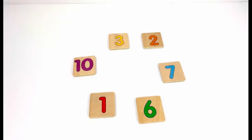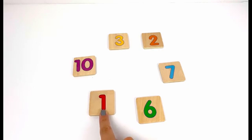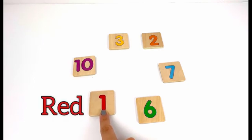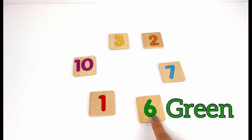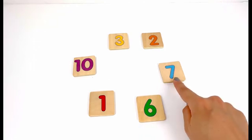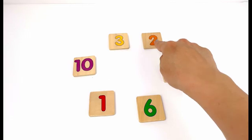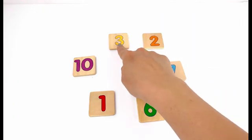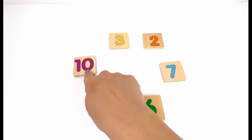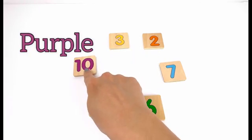Let's see what numbers are left on the table. Number one — it's color red. Number six — it's color green. Number seven — color blue. Number two — orange. Number three — yellow. And number ten — purple.